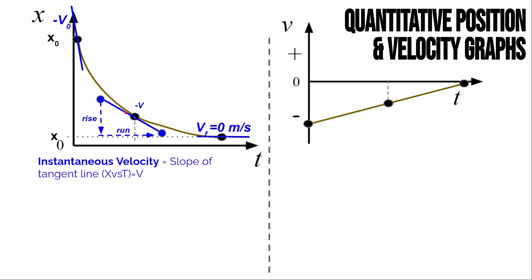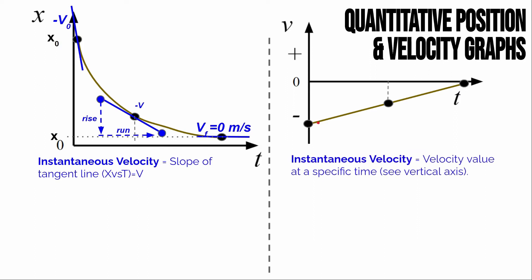To actually calculate it, you draw a tangent line, pick two points on that line, and calculate the slope — rise over run. That's the change in position divided by the change in time, which gives the instantaneous velocity at that specific time. On a velocity-time graph this is easier: at any given time, you simply read the value of the velocity directly off the graph. For example, at time zero you read the initial value, and if the line is at zero at the end, the final instantaneous velocity is zero.